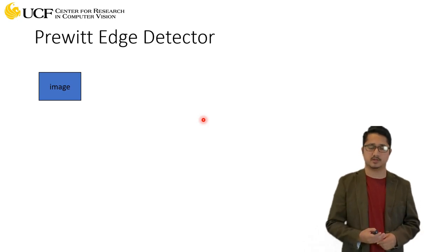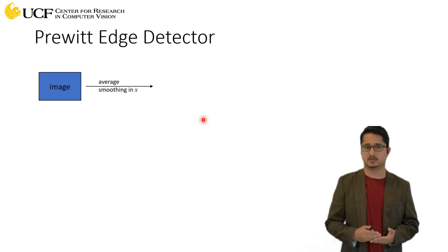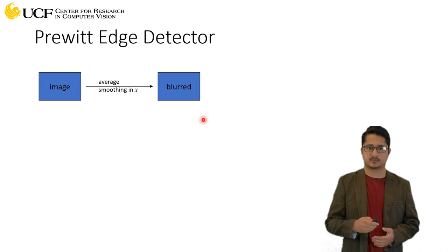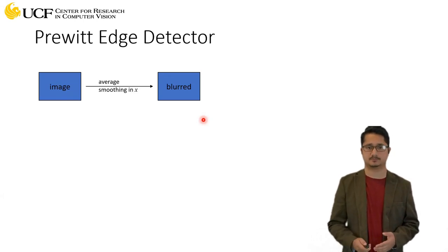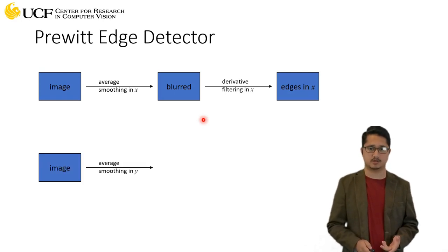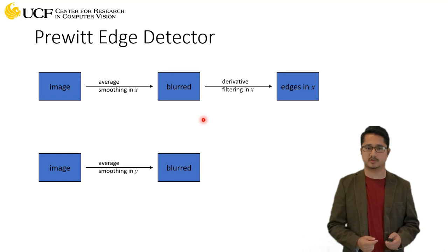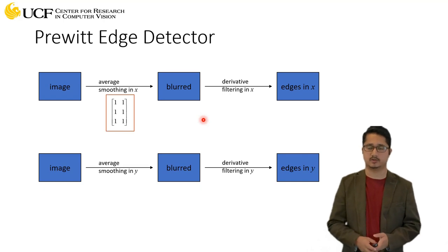Now let's jump directly to the Prewitt edge detector. The steps are: take your input image, perform smoothing in the x direction to get a blurred image, then compute the derivative in the x direction to get edges in x. Repeat the same for the y-axis — smooth along y to get a blurred image, then compute the derivative in y to get edges in the y direction. Combine these two to get the full derivative map.